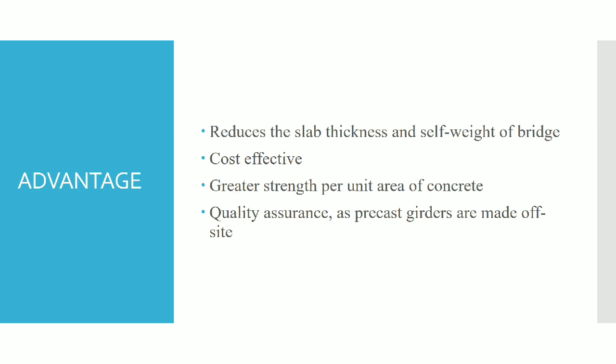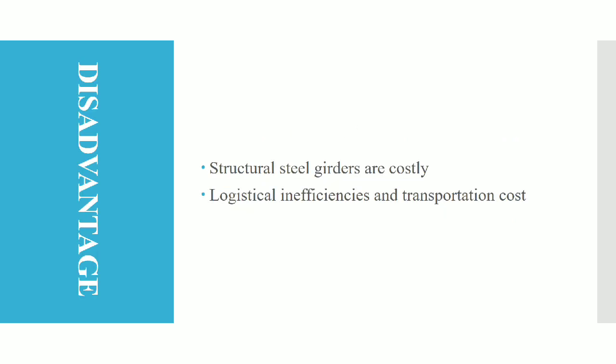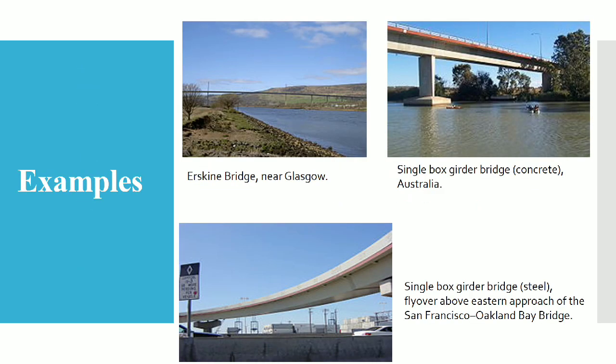There are two disadvantages: structural steel girders are costly, and there is inefficiency in transportation cost. These are the examples of box girder bridges.